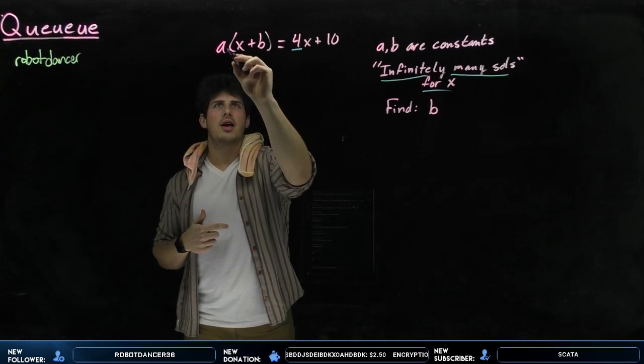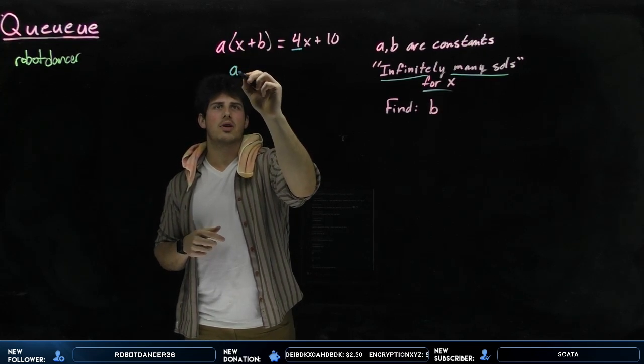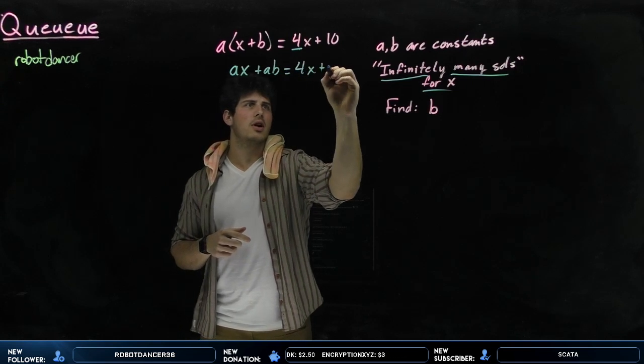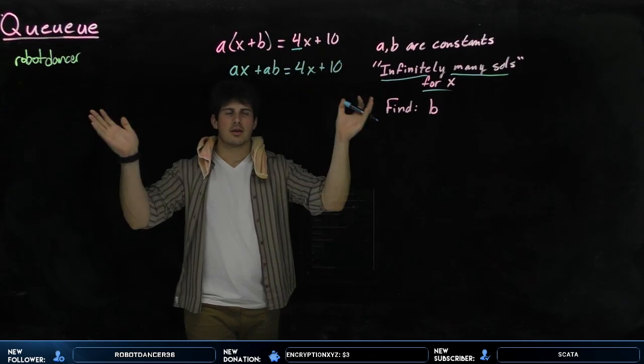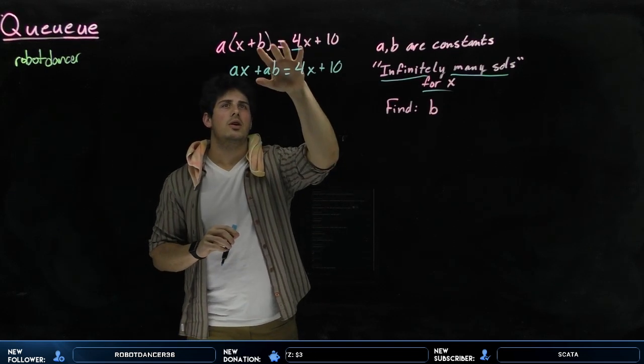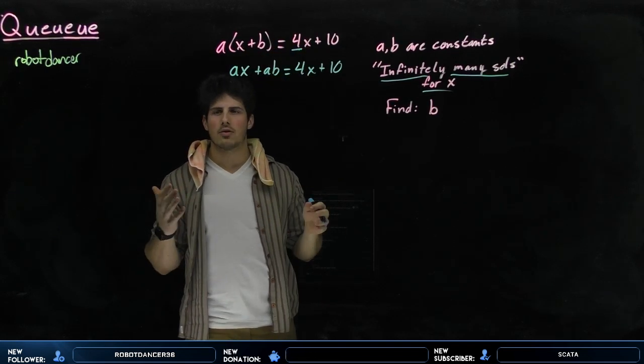For example, I can distribute that. So I get ax plus ab, and that still equals 4x plus 10. Still acting like I have no idea what's going on in this problem, I'm able to at least move one level down.